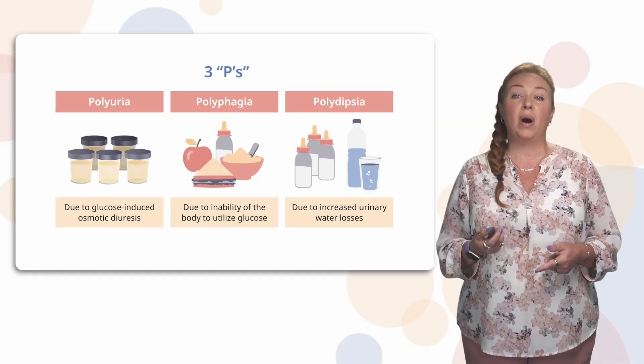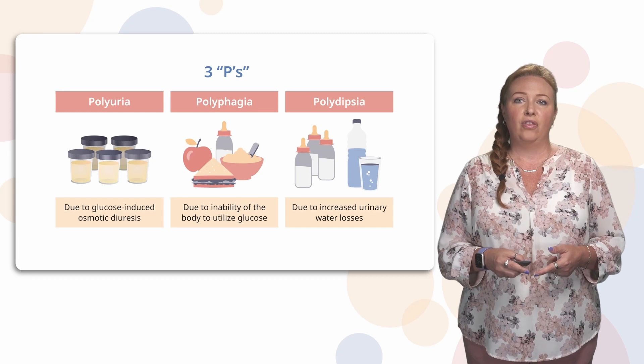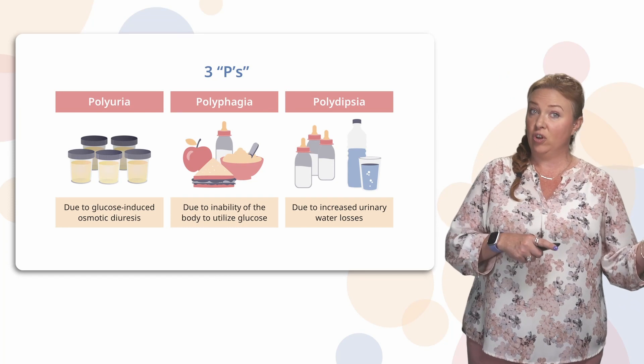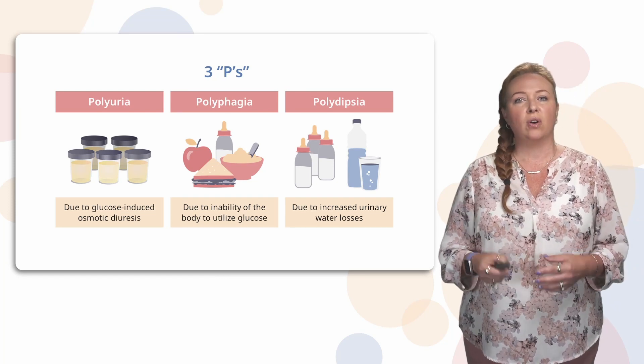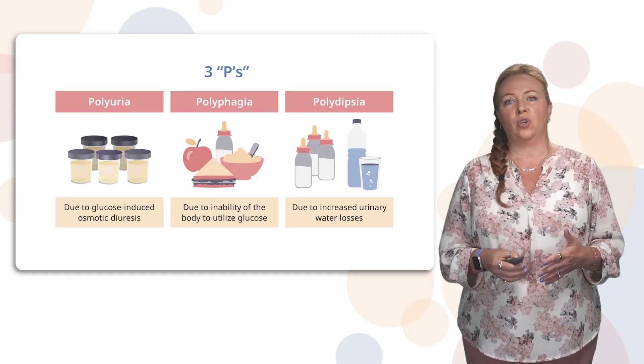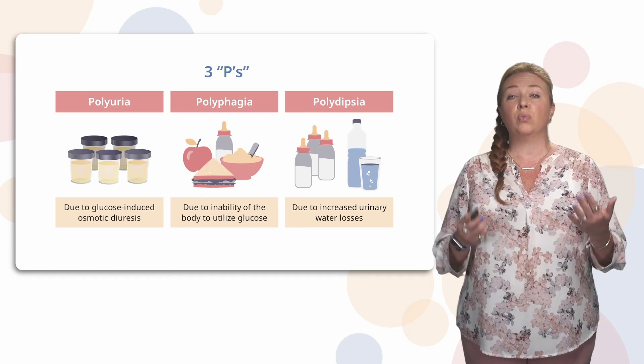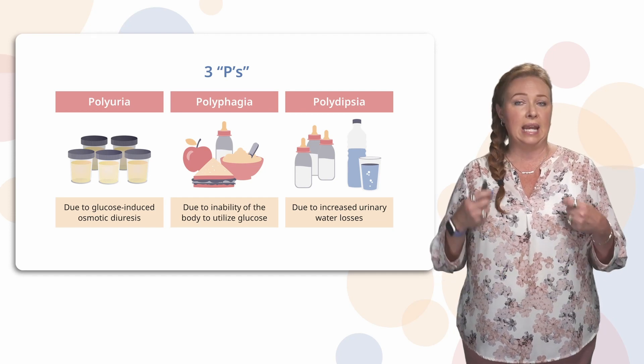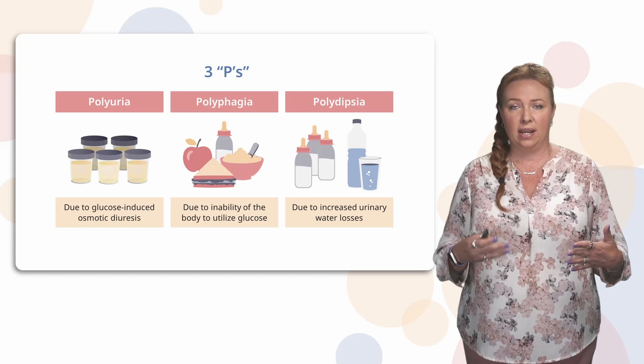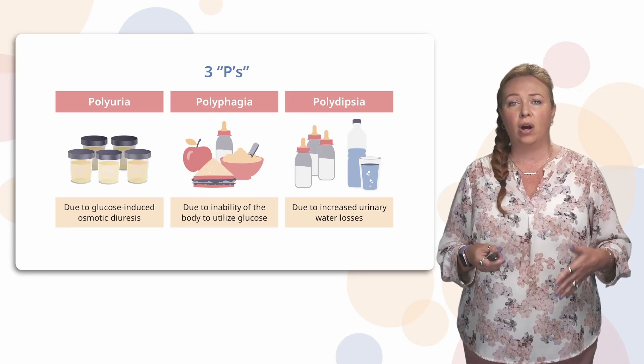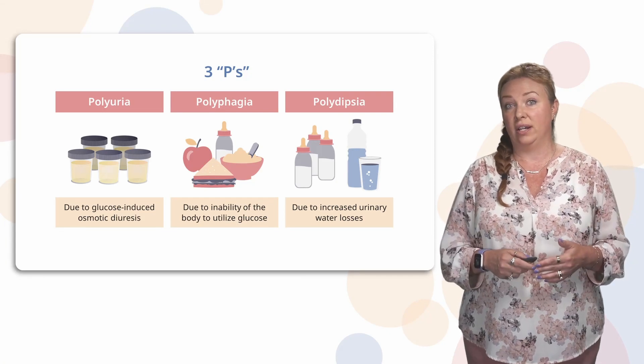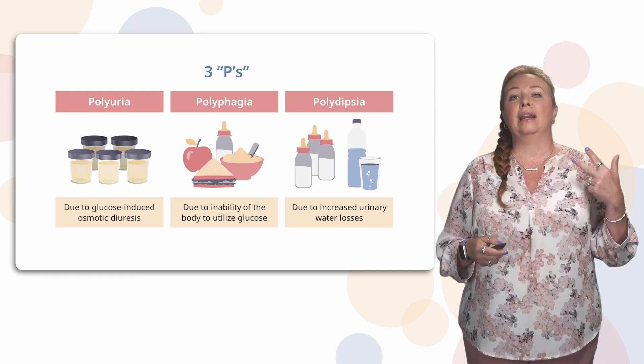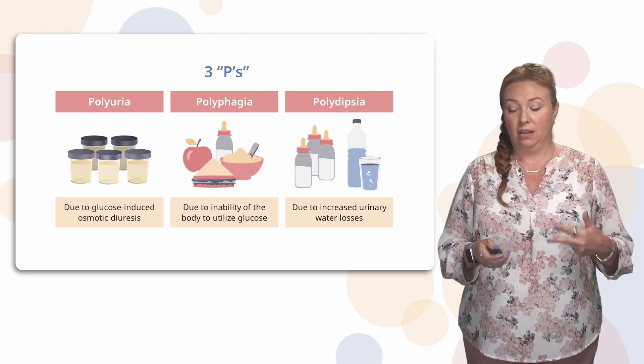The last P is the polydipsia. And this is because your body is having increased urinary water losses because of that first P, remember the polyuria. So they're having increased water loss through the urine and your body responds to that with an increased thirst reflex. So patients are drinking a ton. They're drinking anything they can get their hands on, a lot of water or any other liquid. So they're drinking a lot, they're eating a lot, and they're urinating a lot. That's the three Ps.